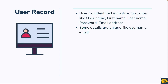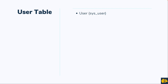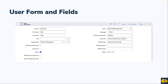Some details are unique, like username and email — meaning they will be unique for each individual user. ServiceNow also has a table for users which stores all user data. The table name is 'user' and the backend name of this table is sys_user.